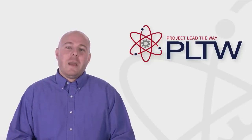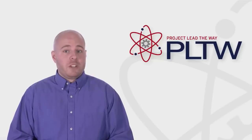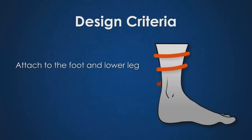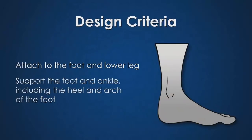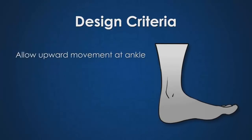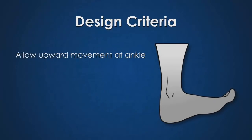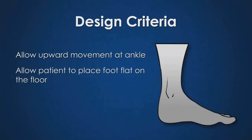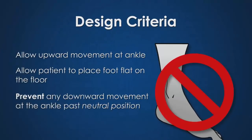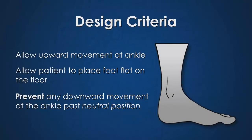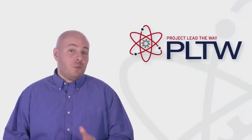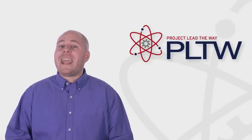As you plan, build, and test your design, make sure that you meet the following requirements. The orthosis needs to attach to the patient's foot and lower leg and support the foot and ankle, including the heel and arch of the foot. It needs to allow upward movement at the ankle and allow the patient to place their foot flat on the floor when standing. It also needs to prevent any downward movement at the ankle from the neutral position where the foot is parallel with the floor — meaning it will stop the patient from pointing or raising up on their toes. The orthosis needs to be comfortable and also removable.